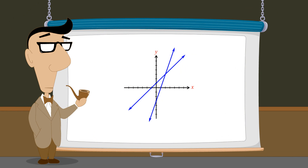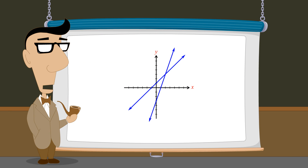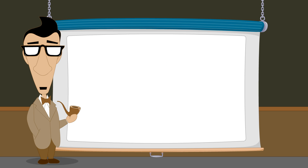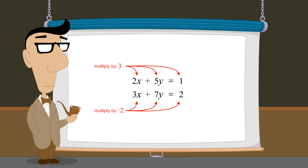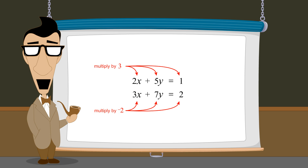So when two equations are added, the resulting equation's graph must pass through the intersection point of the two original equations. However, when using the elimination method it is sometimes necessary to multiply one or both equations by constants before they are added. But after multiplying by constants, will the graph of the resulting equation still pass through the original intersection point?